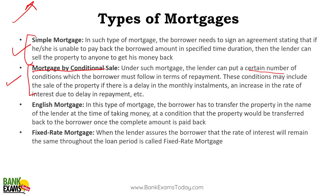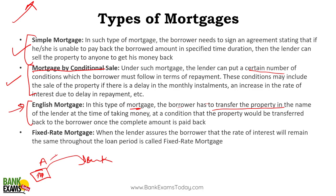English mortgage — this question was asked in previous papers. In this type of mortgage, the borrower has to transfer the property in the name of the lender. For example, if A is the borrower and B is the lender, A needs to transfer ownership of the property to the bank. When A repays the loan, he gets back his property. That is English mortgage.